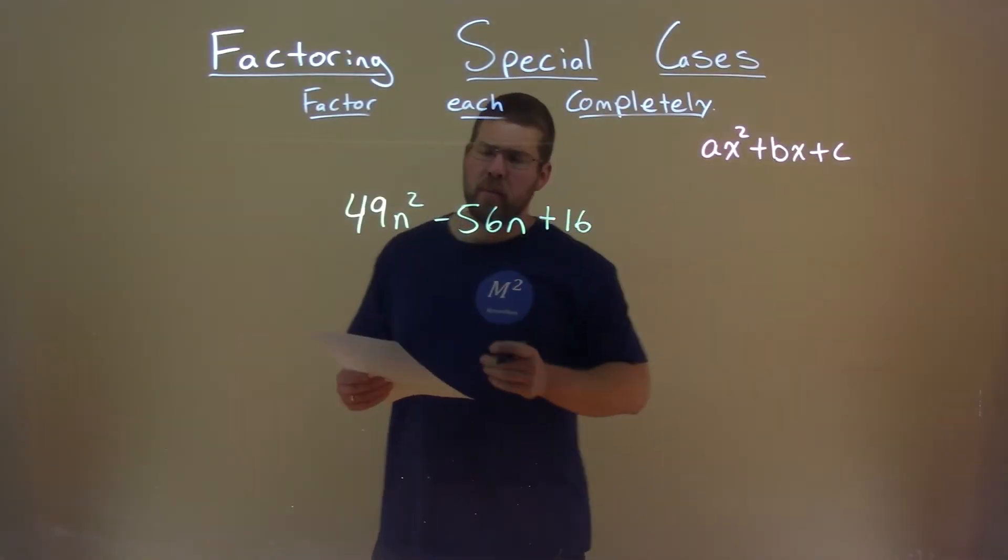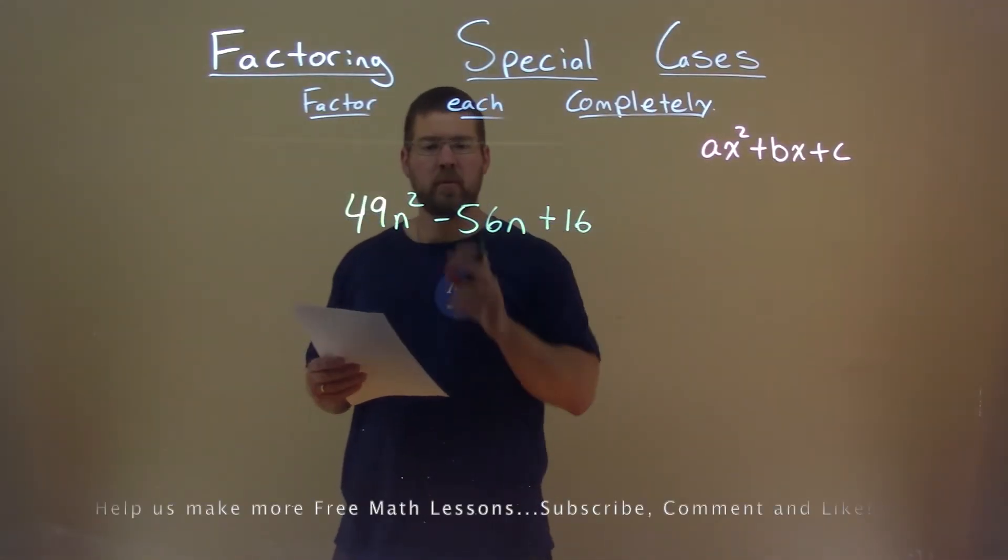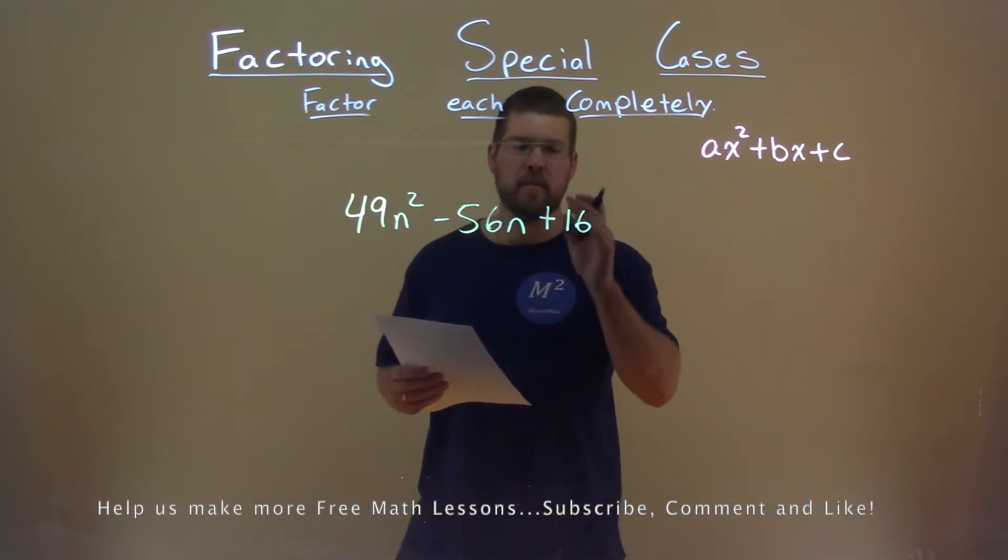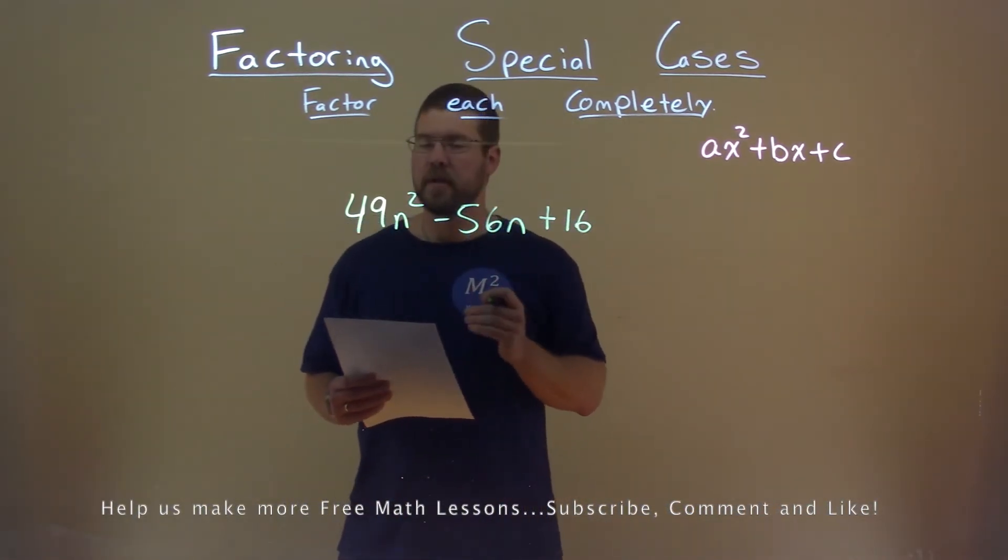We're given this problem right here: 49n squared minus 56n plus 16, and we want to factor this completely.